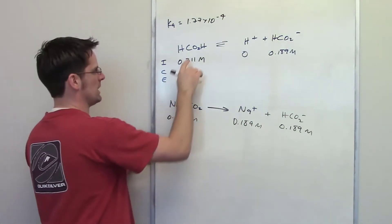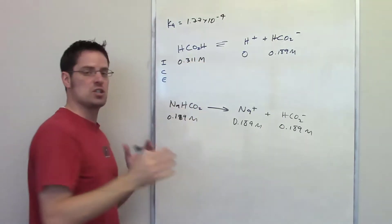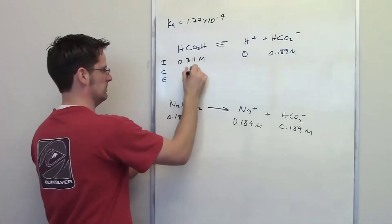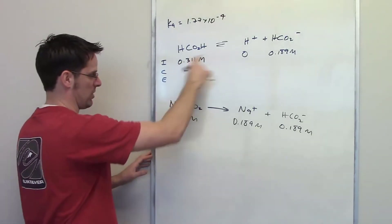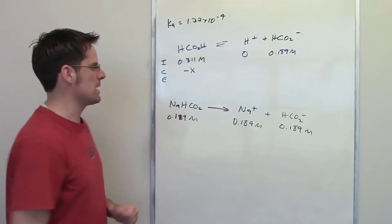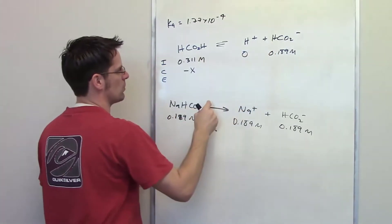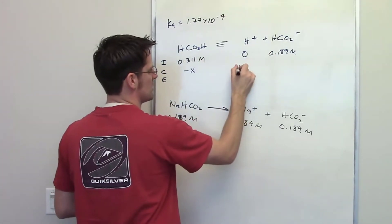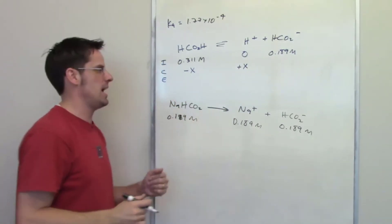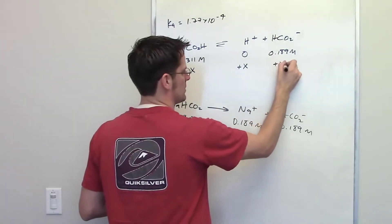So gradually the concentration of formic acid is going to change by an amount, which I will call X, and it's going to decrease as this goes back and forth and back and forth until reaching equilibrium. Because it's present in a one-to-one-to-one ratio with these ions on the right, the H plus concentration is going to increase correspondingly by plus X, as is the formate concentration.